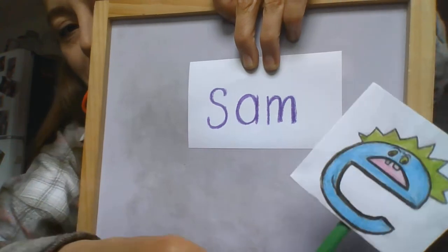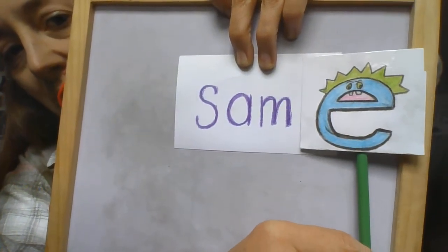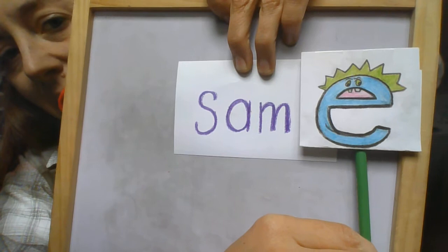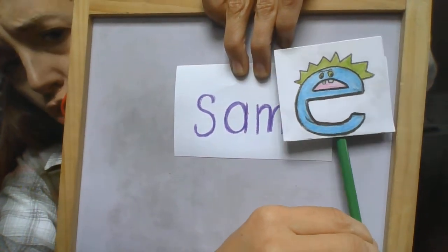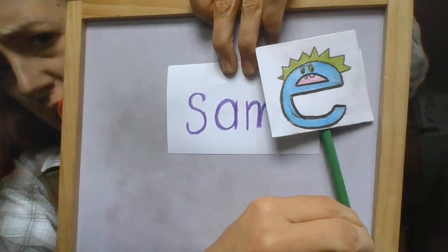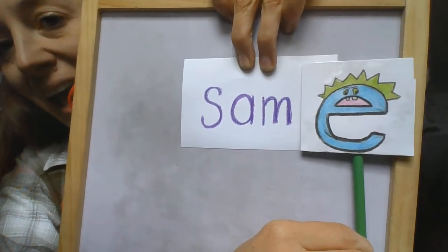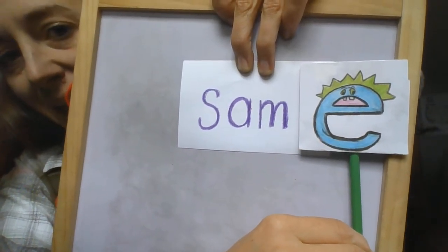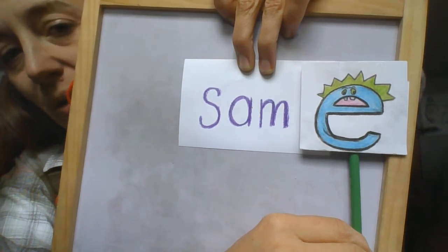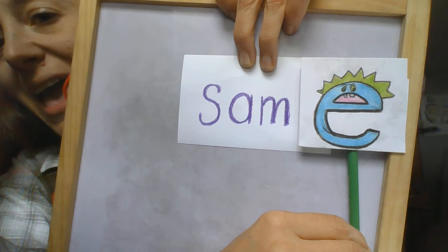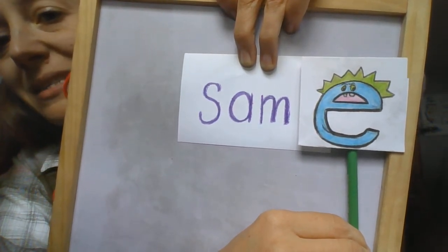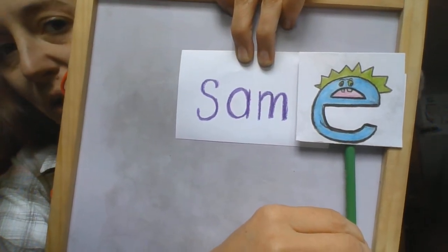But if bossy E shows up at the end of the word, do you know what he does? He tells A what to do. He says to A, say your name. And A has to say his name in the word. So if A said his name, it would be s, a, m, same, same. That's a new word.